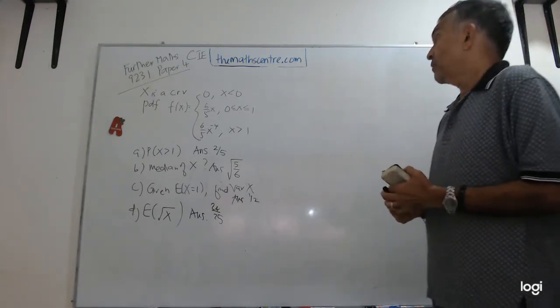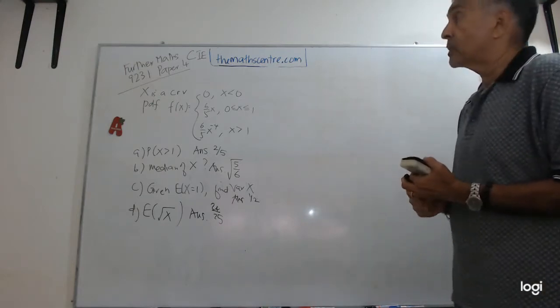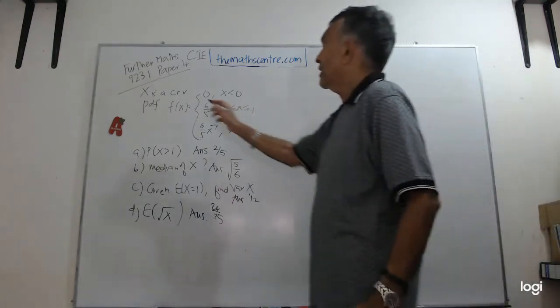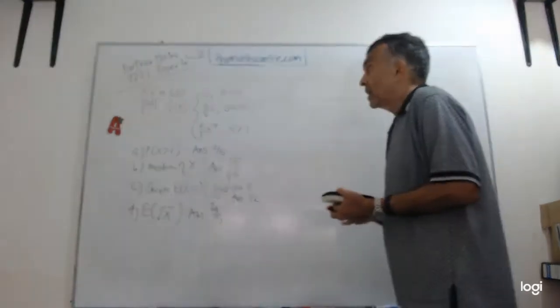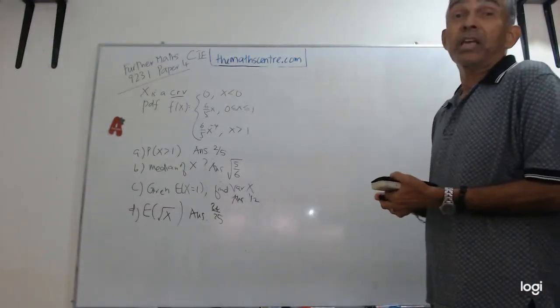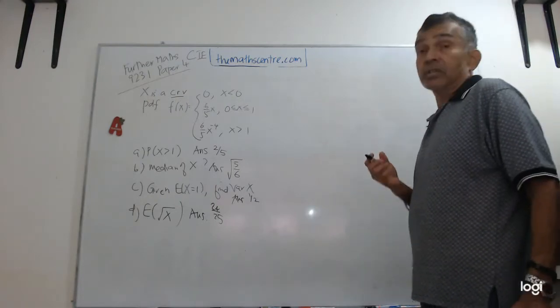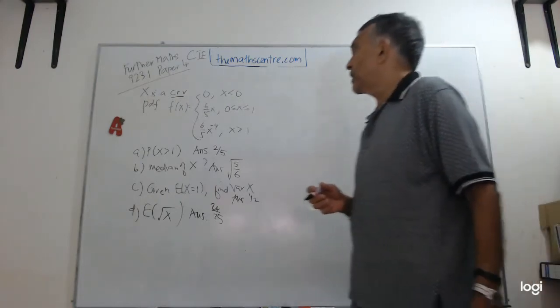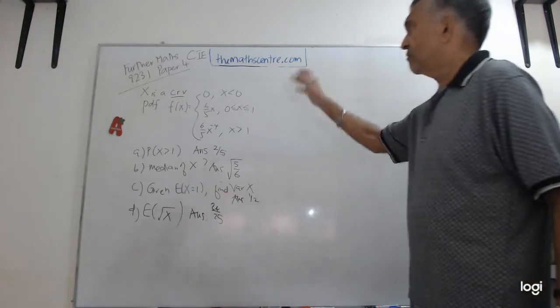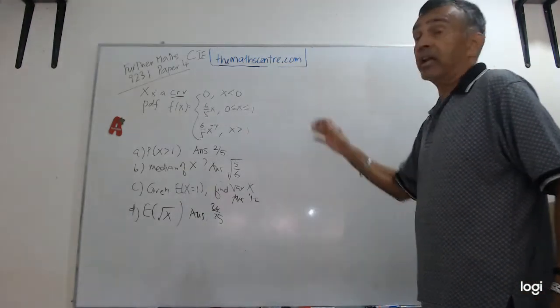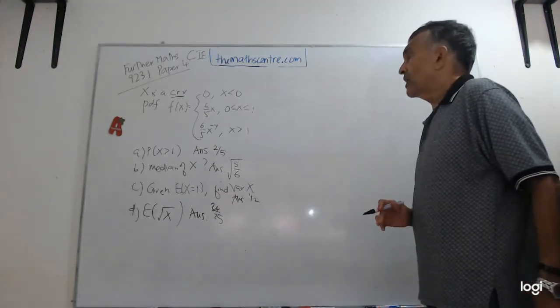Let's start. We are given x is a continuous random variable. CRV is continuous random variable. I repeat, look up the question on the CIE website. And the probability density function, they have given to us, the probability density function for x between 0 and 1 and for x greater than 1.